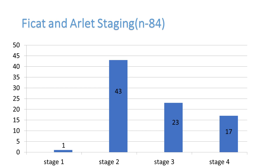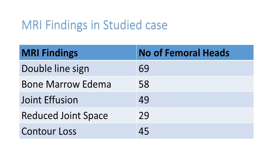Regarding Ficat and Arlet staging: 1 case belongs to stage 1, 43% are stage 2, 23% are stage 3, and 17% are stage 4. Double line sign is seen in 69% of cases, bone marrow edema in 58%, joint effusion in 49%, reduced joint space in 29%, and contour loss in 45% of cases.